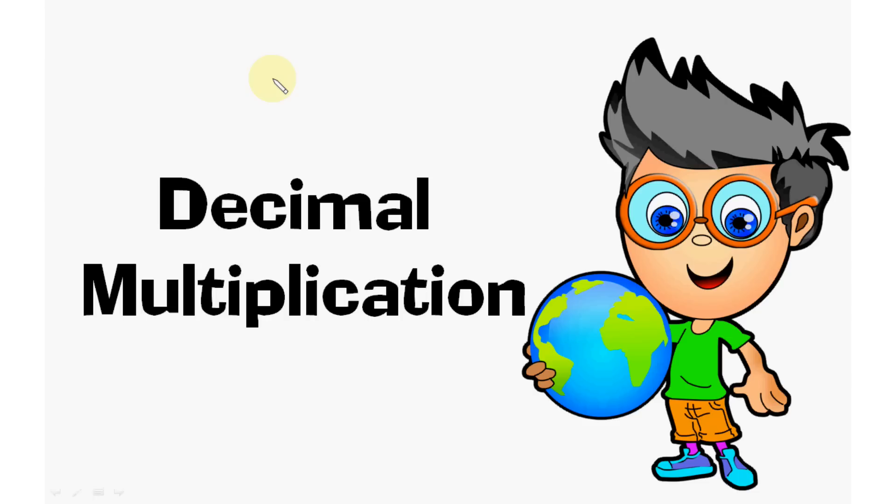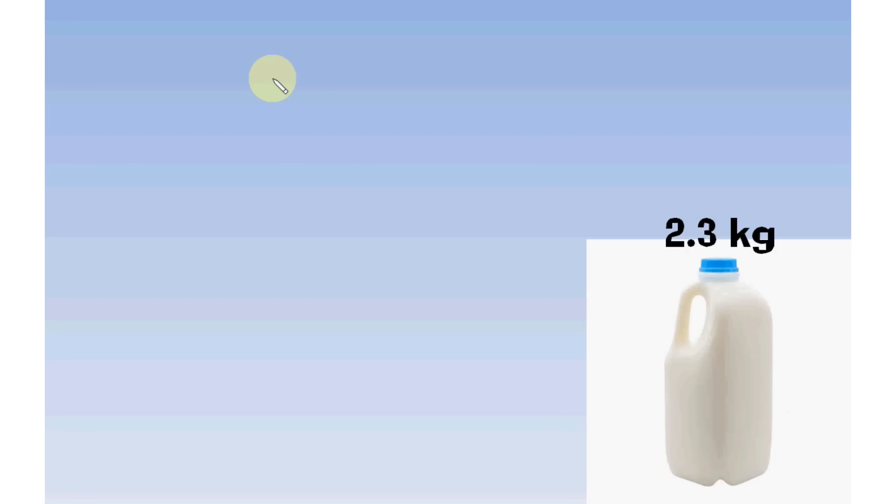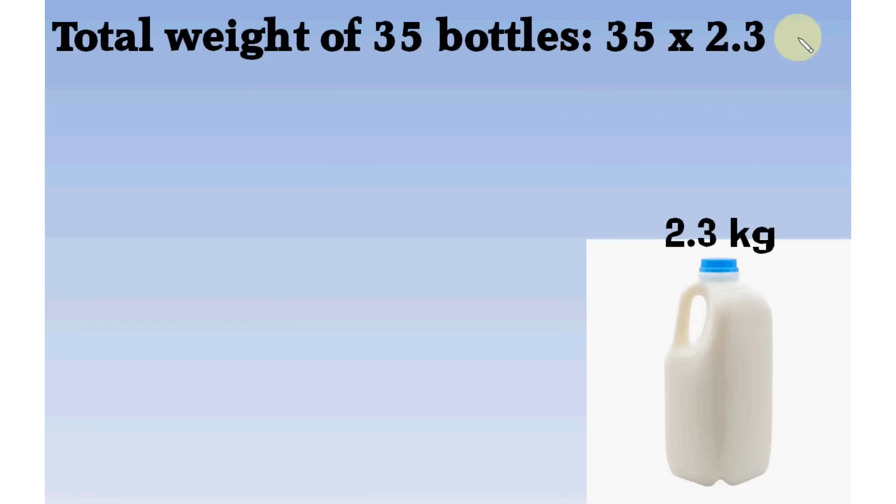Before we start, you must know that decimal multiplication is any ordinary multiplication. Weight of a 2 liter milk bottle is 2.3 kilogram. Then, what is the total weight of 35 bottles?